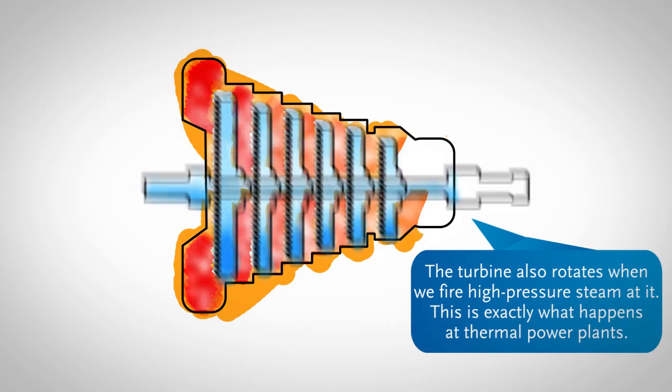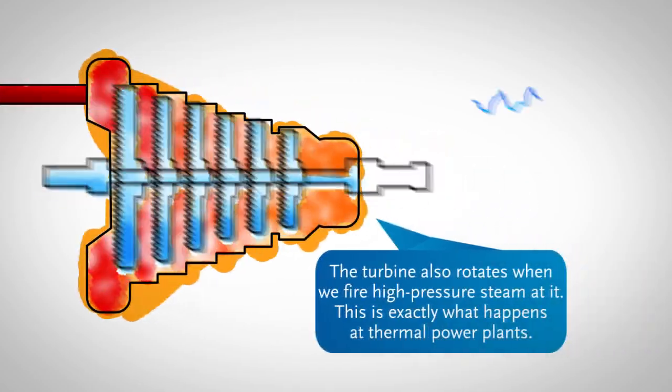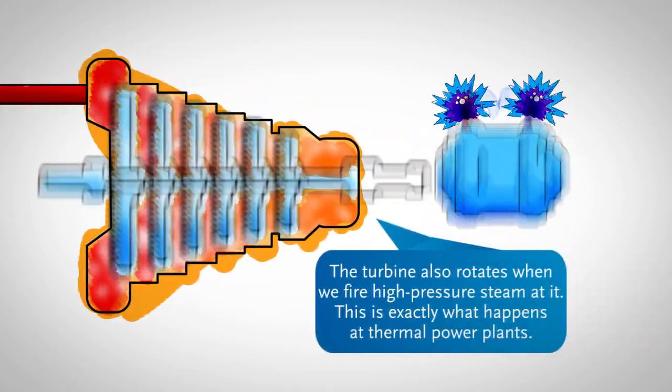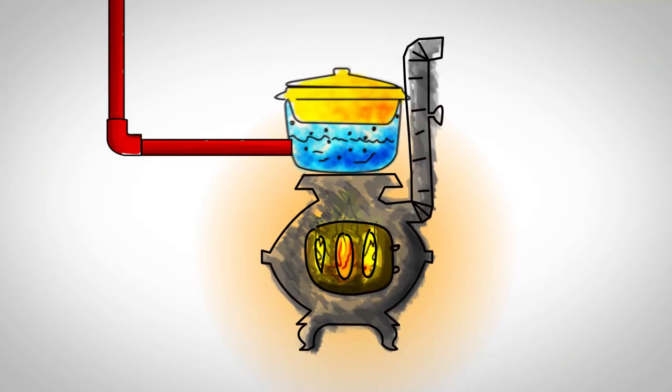The turbine also rotates when we fire high-pressure steam at it. This is exactly what happens at thermal power plants. Steam is produced when water is heated to high temperatures.